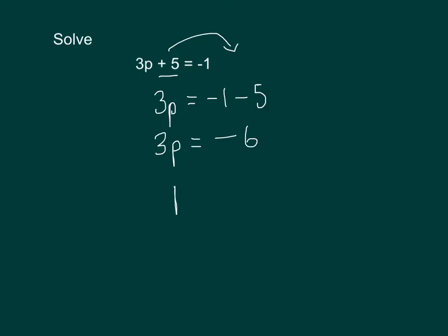And then finally, to get what p is, we divide minus 6 by 3. And that's because on this side, 3p means 3 times, or 3 multiplied by p. So the opposite of times in is dividing.